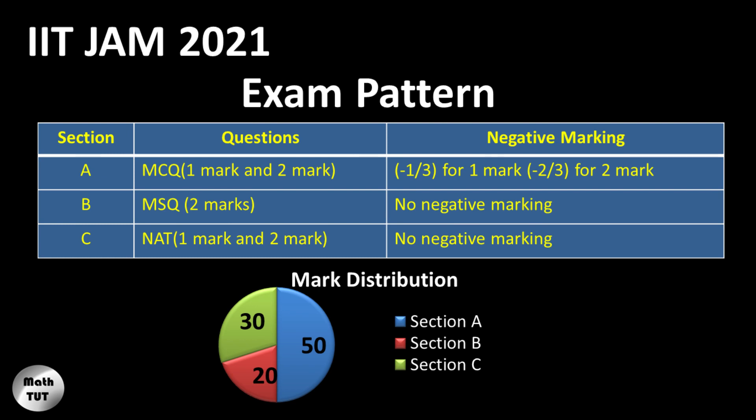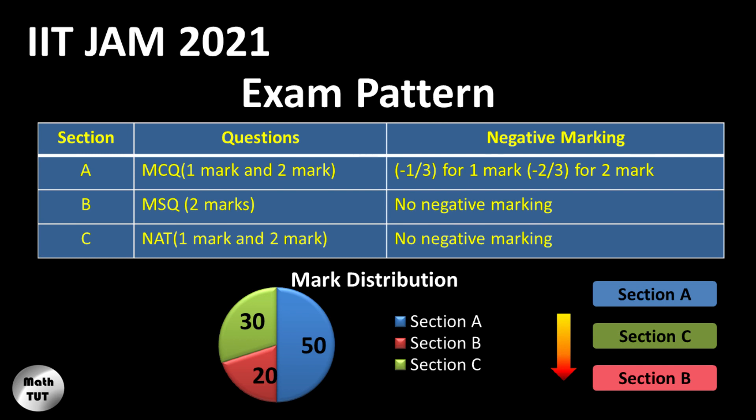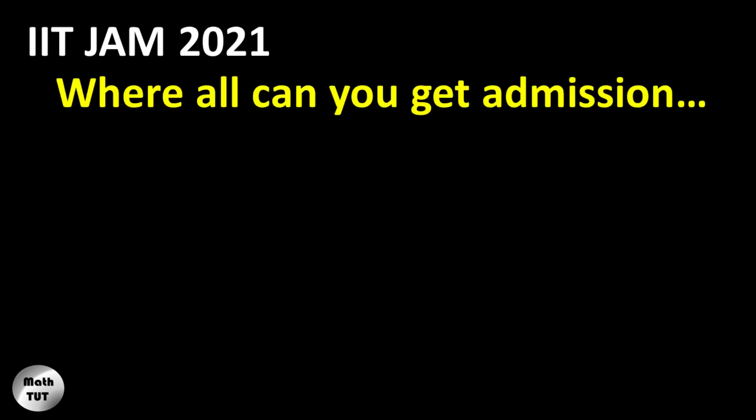Here is the first tip: the order in which you should attempt the questions of IIT JAM. I think it is better to attempt Section A first, as it gives you a large portion of the marks. Section C should be next, and Section B should be last, because Section B has MSQ questions with no partial credit. If a problem has three correct answers and you only mark two, the question is counted as wrong.